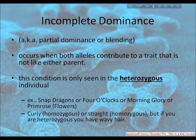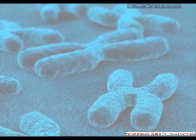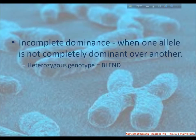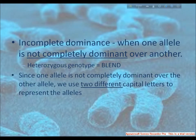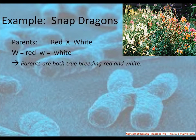For example, in 4 o'clock plants, Mirabilis jalapa, when the red-flowered plant is crossed with the white one, pink-flowered F1 plants are obtained. If the pink-flowered F1 plants are crossed, the F2 plants appear in a phenotype ratio of 1:2:1, having red, pink, and white.